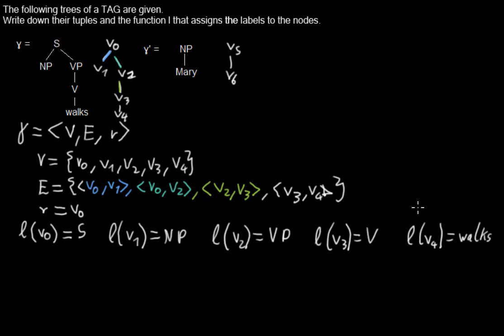Now we are done with the first tree. Then we have the second. And to not confuse the different sets, we name them all differently. So we will get a bar. So the set of gamma bar, gamma bar consists of the tuple.